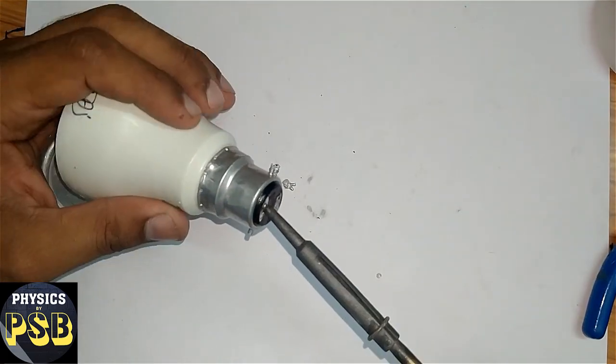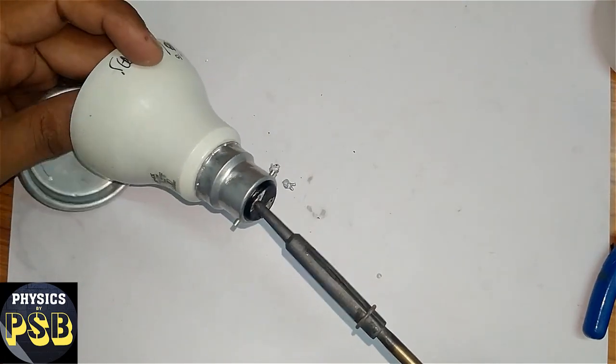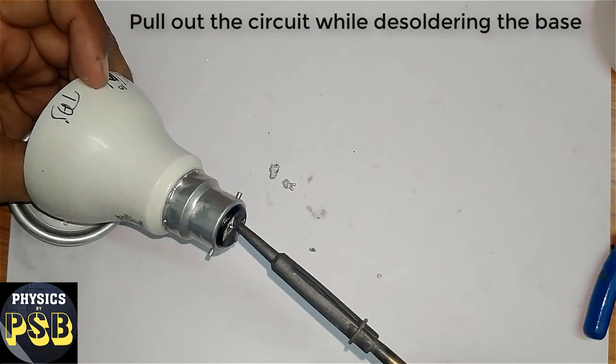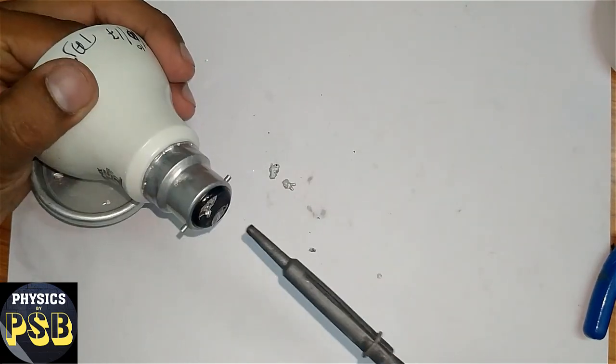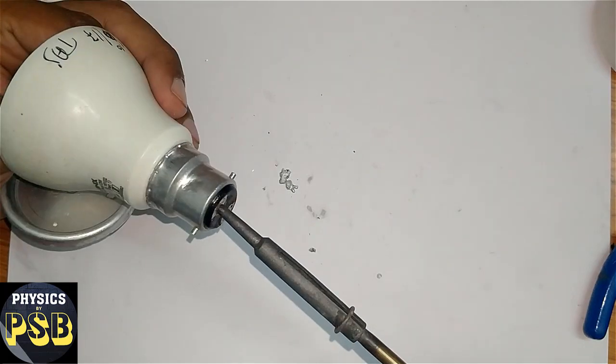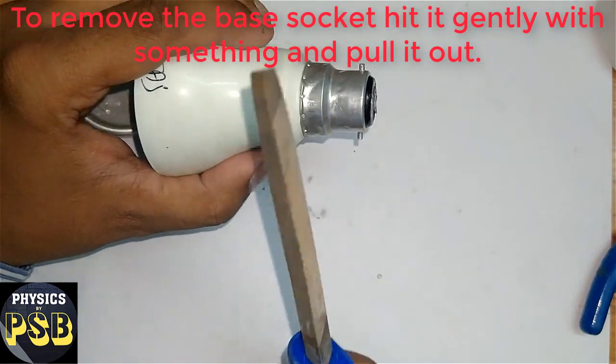Now pull the circuit out. See, this manner it can be removed. Now you can see the circuit has come out. Hit this portion with something, then pull it out. It comes off very easily.